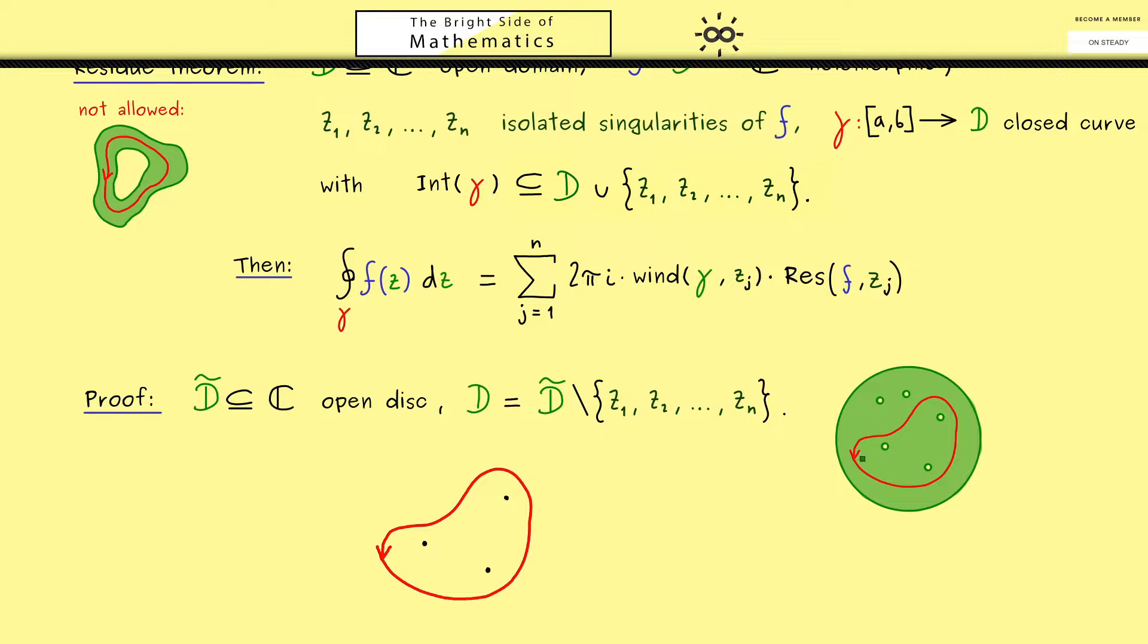Ok now for the proof let's make the curve gamma here a little bit bigger. Ok and then you should see the idea for each singularity we can simply add a keyhole contour. And then we can simply argue as for the single keyhole contour that Cauchy's theorem is applicable here. So we have a closed curve in the correct domain. So Cauchy's theorem tells us the contour integral is zero.